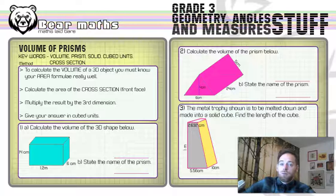A solid is just a 3D object. Cubed units are what we measure volume in. And a cross-section is the front face of the shape, the face that you see, you need to calculate the area of in order to work out the volume of a prism.